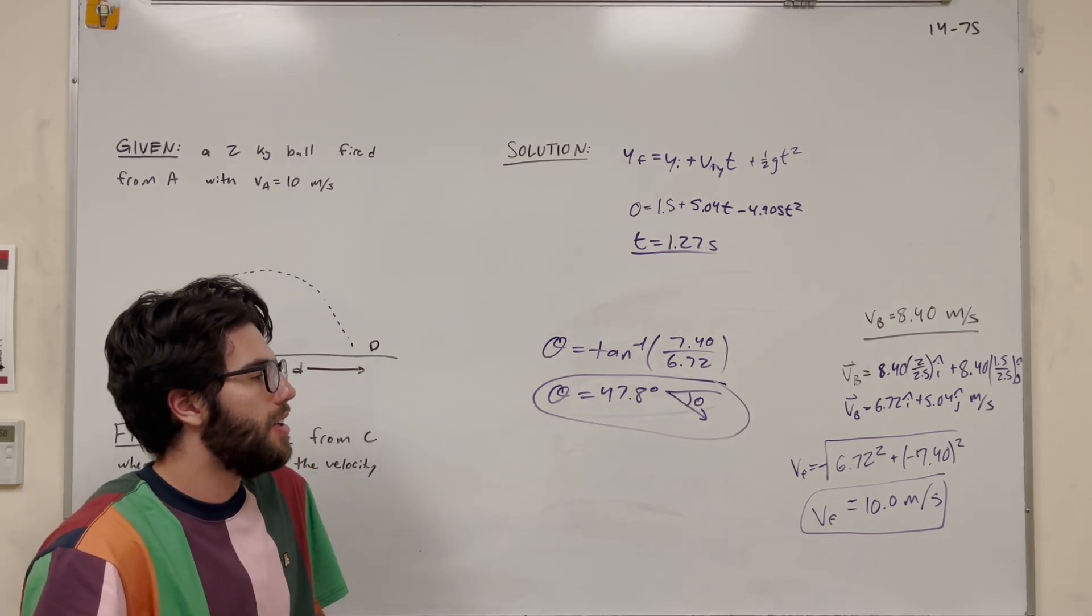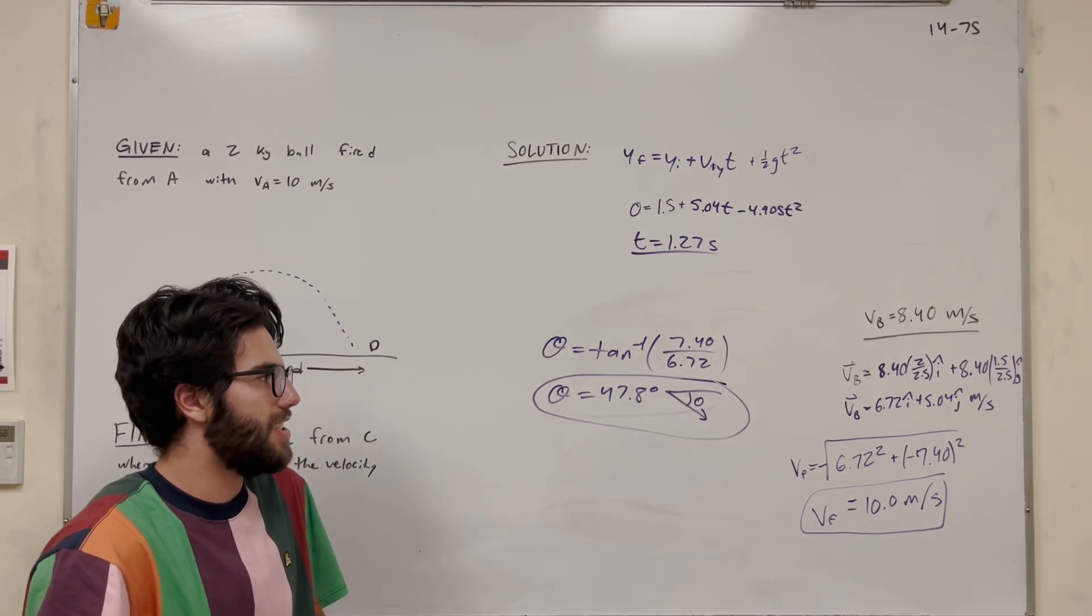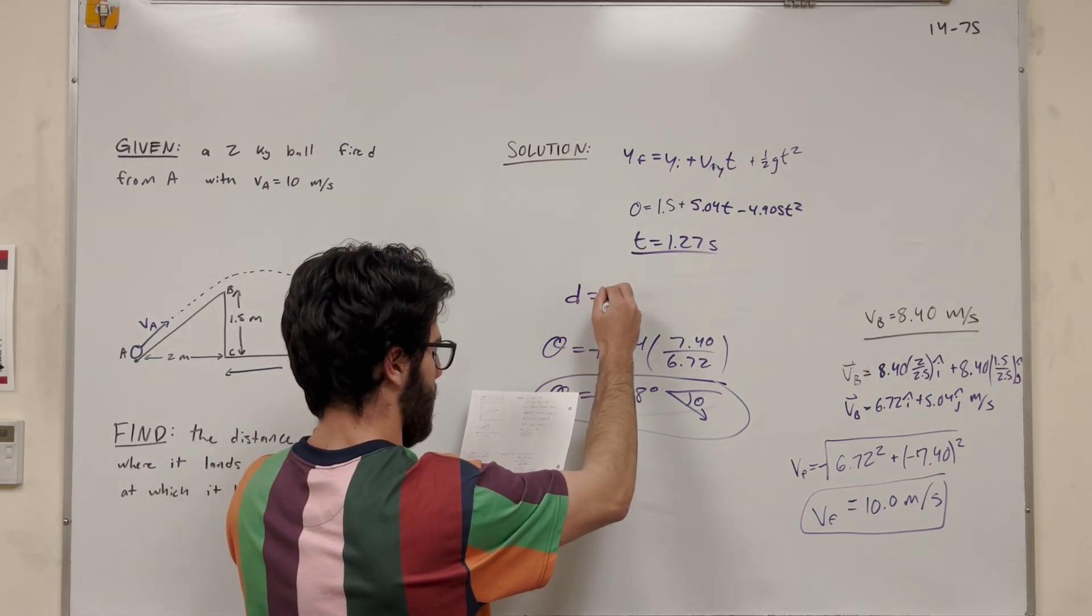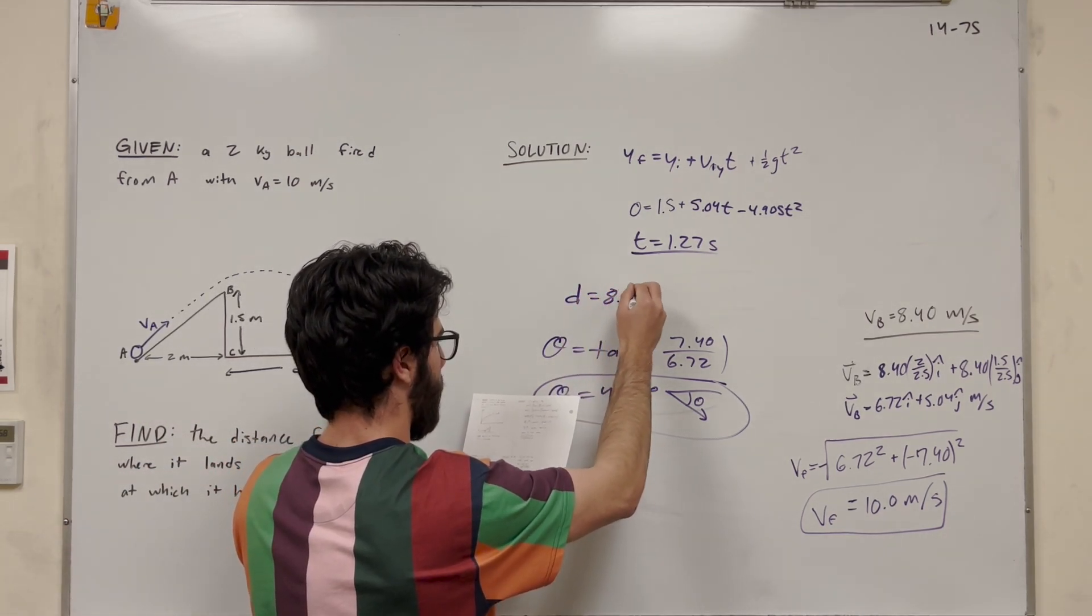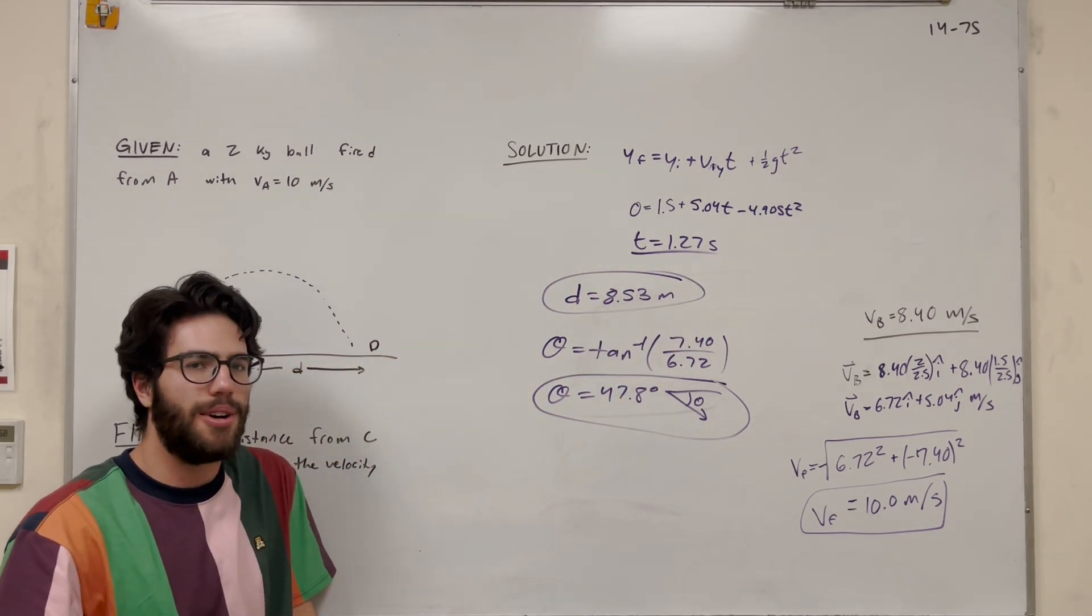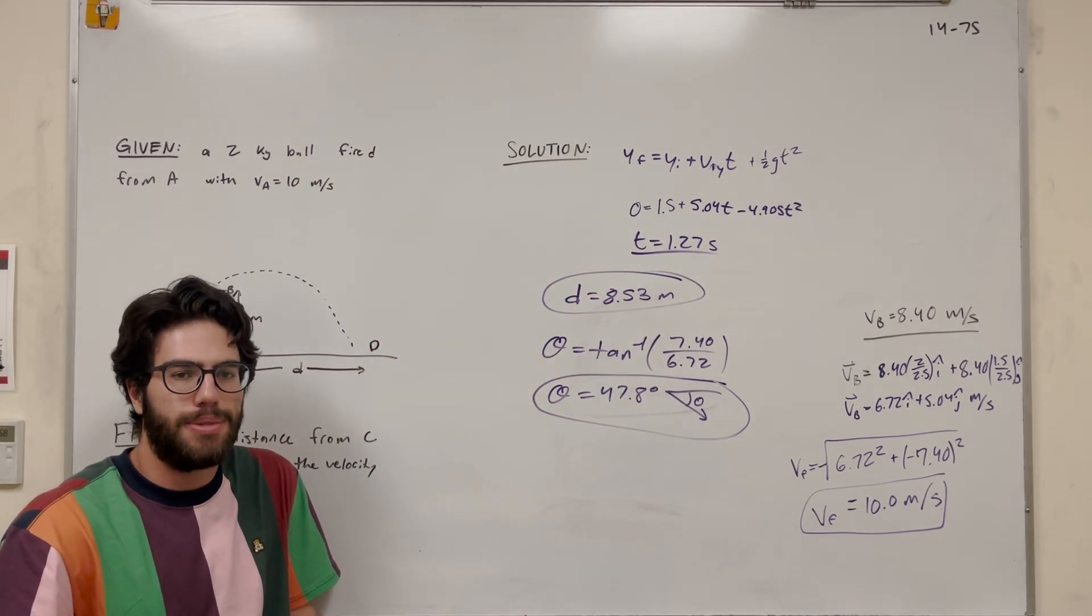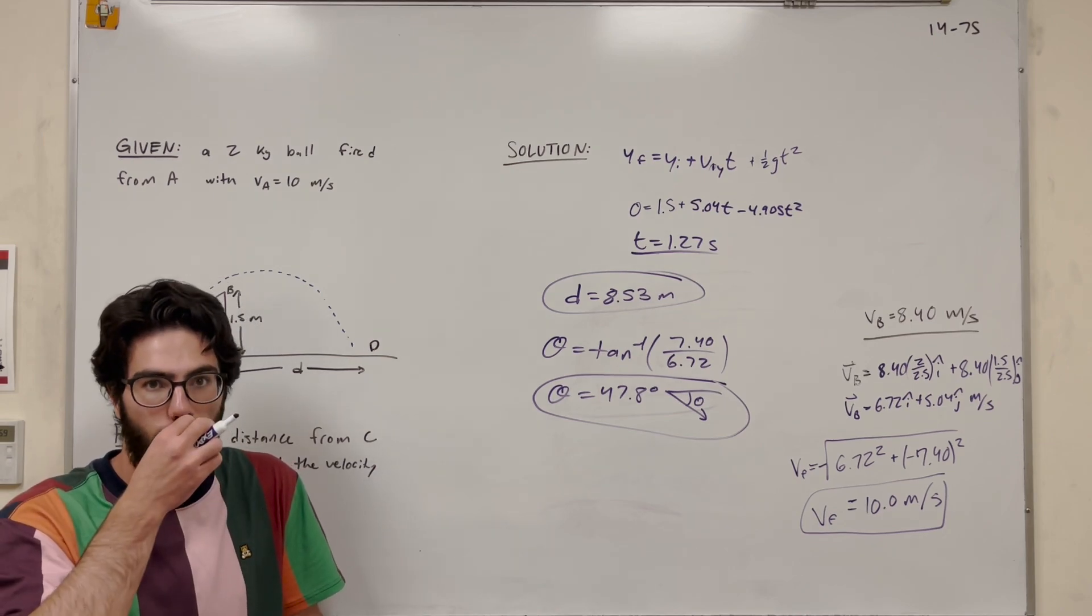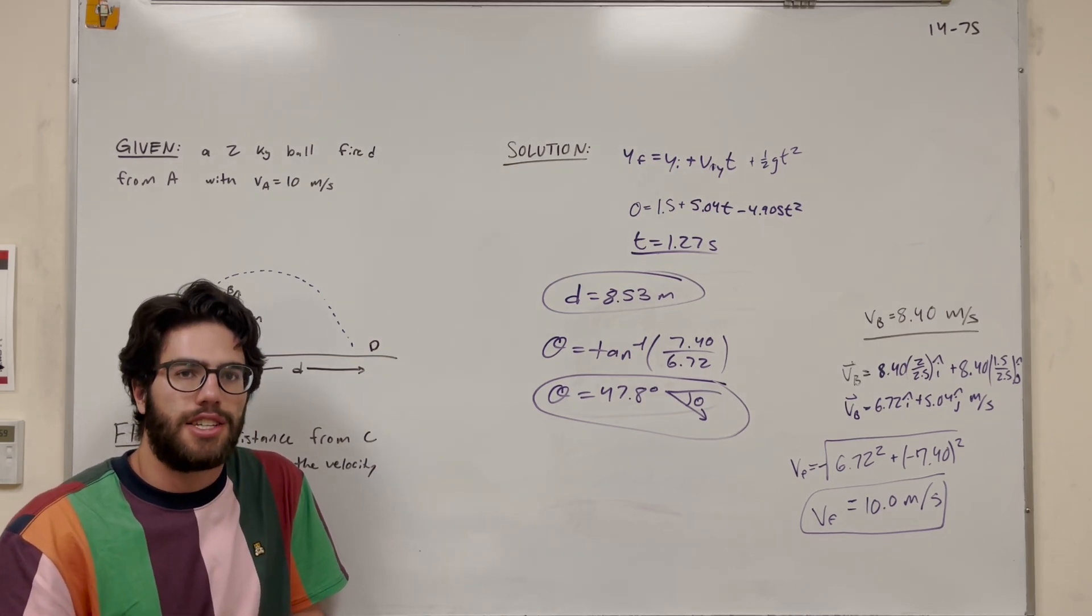All right, so there we go. We solved the problem. I erased the answer, didn't I? The answer was D is equal to 8.53 meters. There you go. We solved the problem. So thanks for watching. Hopefully this helped. If you're still struggling with that work energy formula, feel free to check out my channel. I have a whole bunch of videos on it. And I'll see you in the next video. Peace.